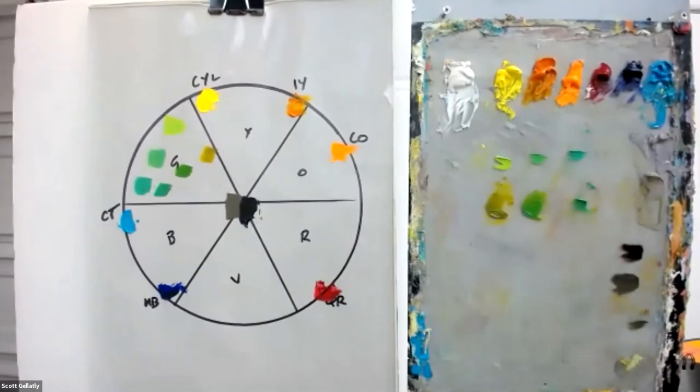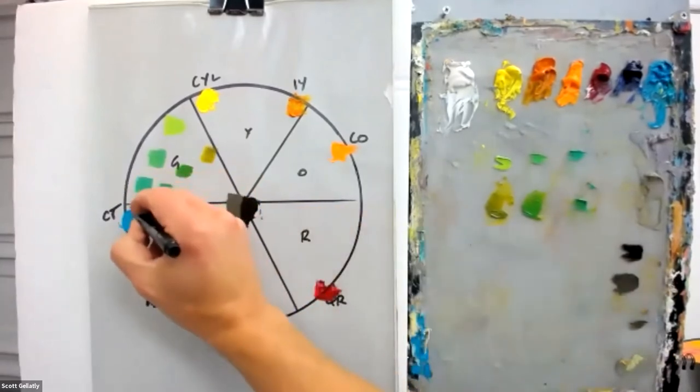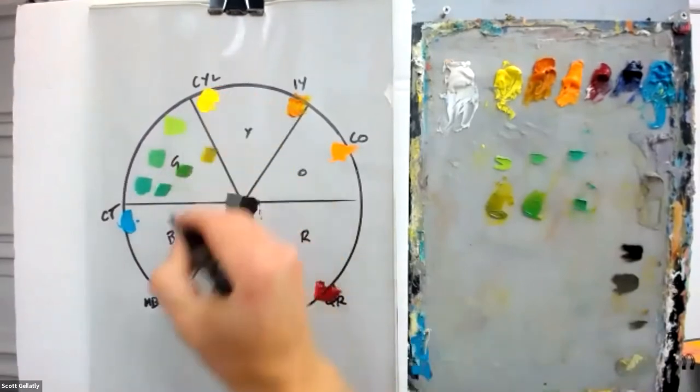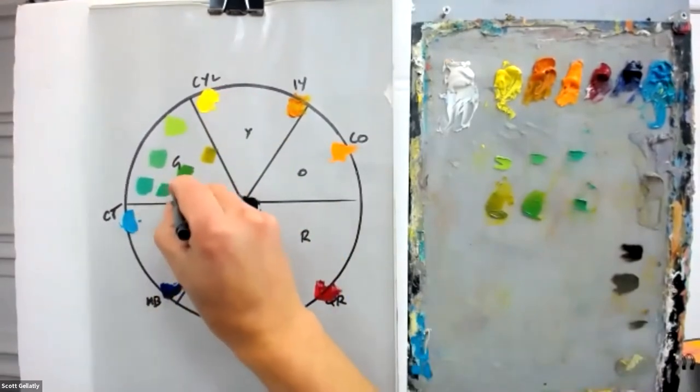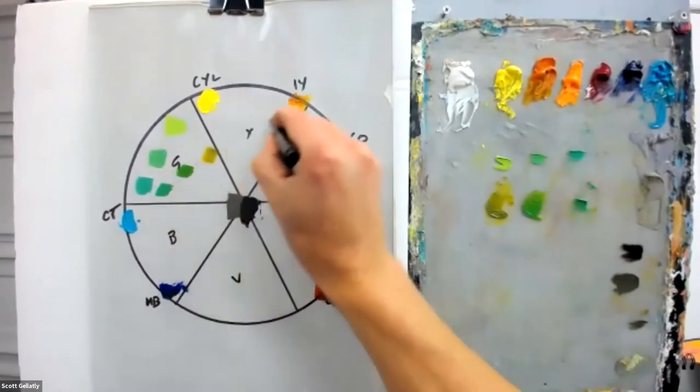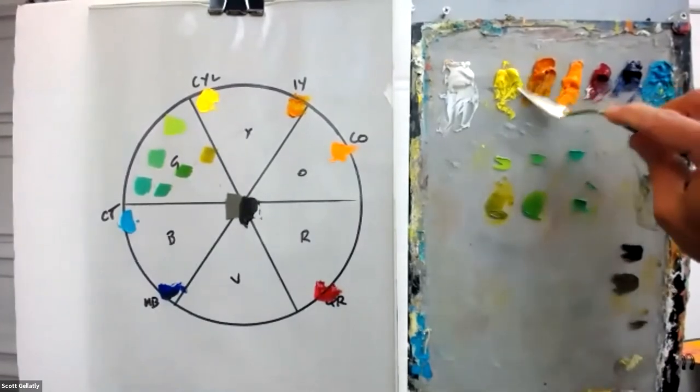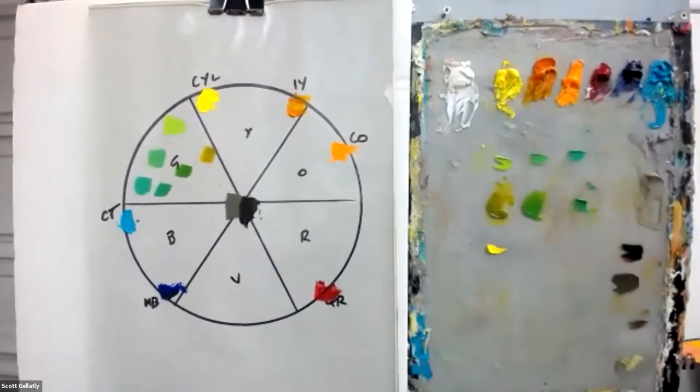Think about them as lines from one color to the next that we're mixing within. We've got cad yellow light and ultramarine blue.